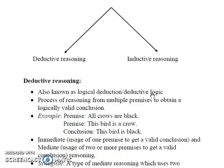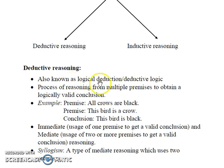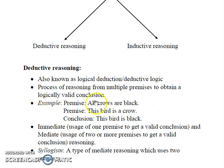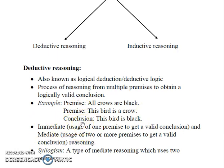Deductive reasoning, which is also known as logical deduction or deductive logic, is the process of reasoning from multiple premises to obtain logically valid conclusions. For example, let's consider two premises. First: all crows are black. Second: this bird is a crow. So the logical conclusion that can be derived from these two premises is that this bird is black.